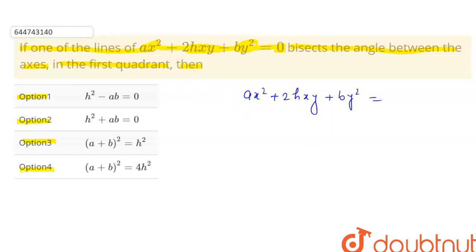We know the standard result: let's suppose this equation has two lines with slopes m₁ and m₂. Then m₁ + m₂ = -2h/b and m₁ × m₂ = a/b. You should know this result.